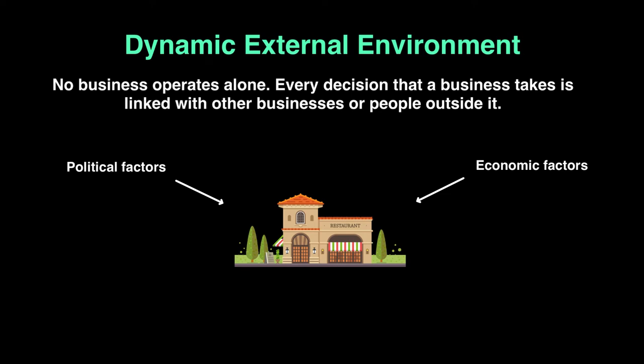The E in PEST stands for economic factors. No business controls inflation, unemployment, or economic growth, but whatever changes in the economic environment will directly impact the business. If the economy goes into recession — like during COVID when businesses had to shut down — it had an enormous economic impact. Businesses couldn't control it but had to respond. For example, colleges and universities moved to online teaching, and grocery stores developed delivery services. That's how you react to economic changes you cannot control.